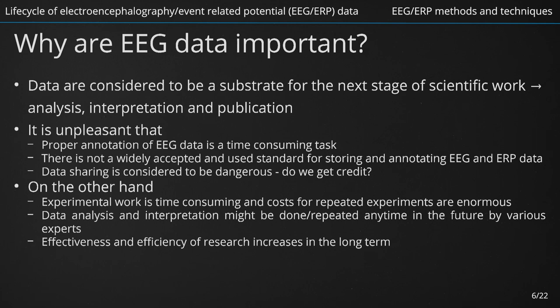Apart from this, some researchers consider this approach of annotating, sharing and even publishing raw and uninterpreted data as potentially dangerous, since there might be some other researchers who can interpret their data first and get the scientific credit for it. Despite these fears and difficulties, it is reasonable and beneficial to standardize, annotate, share and publish both raw and interpreted EEG data. The experimental work is very time-consuming and costs for repeated experiments are enormous. Moreover, we have to admit that data analysis might not have been done correctly just by mistake. We can also come with better analytic methods and higher computational power in the future. So in the long term, well-annotated, standardized and shared scientific data would increase both the effectiveness and efficiency of research.